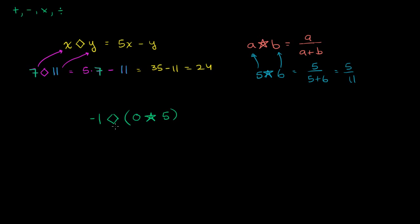Because we haven't figured out, we haven't defined whether diamond takes precedence over star or star takes precedence over diamond, the way that we have that saying that you do multiplication before you do addition. We haven't defined it for those operations, but that's what the parentheses helps us do. So we want to evaluate this parentheses first.